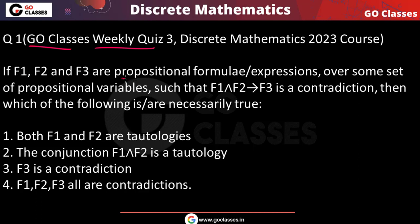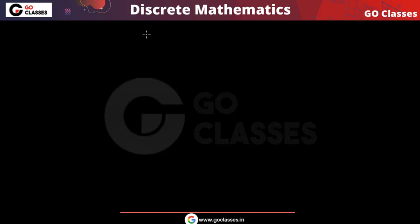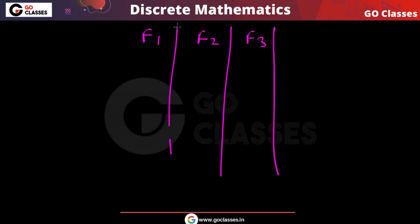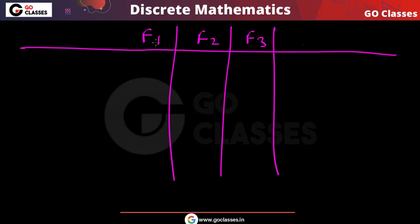If f1, f2, f3 are propositional formulas — propositional expressions over some set of propositional variables — such that f1 ∧ f2 → f3 is a contradiction, then which of the following statements is necessarily true? The question involves three propositional formulas f1, f2, f3 over some set of propositional variables.